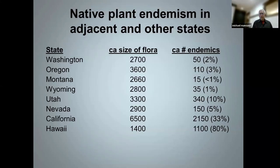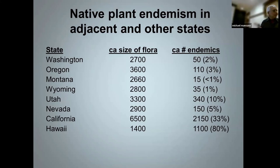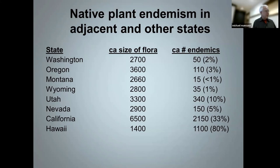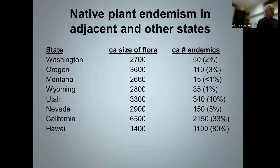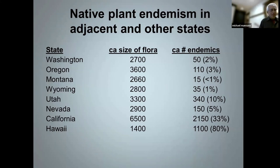This slide shows a comparison of Idaho's endemic flora to adjacent states. Idaho's 2% is pretty similar to most other western states, but really pales in comparison to California and especially to Hawaii, where 80% of the flora is endemic. That used to be 90%, but well over 100 species of endemics in Hawaii are now extinct, and there are about 200 more species with fewer than 50 plants left in the wild. Even though Hawaii has much less than 1% of the land mass of the United States, it has over 40% of all federally listed threatened and endangered plant species.